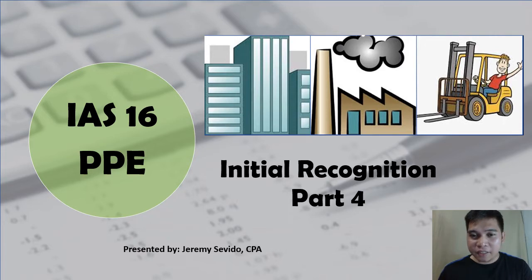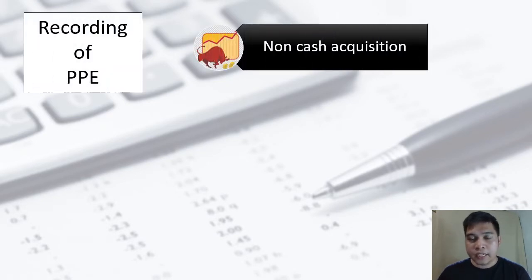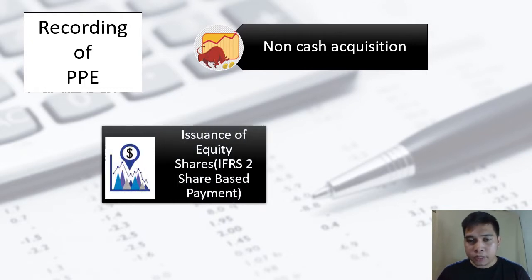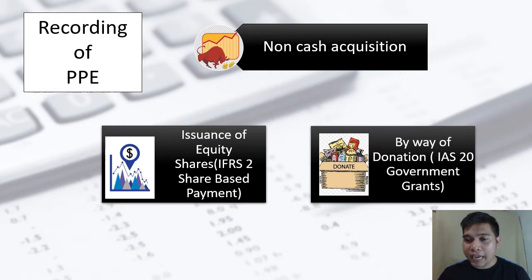Welcome back. For today's video we will discuss initial recognition, part four. The focus is the purchase of property, plant and equipment by way of non-cash acquisition. An asset can be acquired by issuing an equity instrument, which is governed by IFRS 2 Share-Based Payment, or it can be acquired through donation, governed by IAS 20, International Accounting Standard 20, specifically government grants.